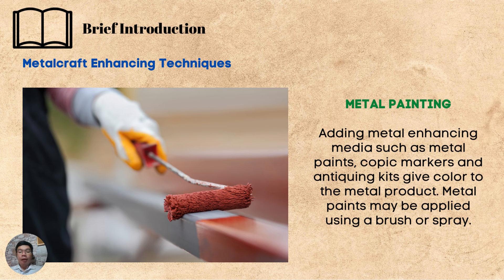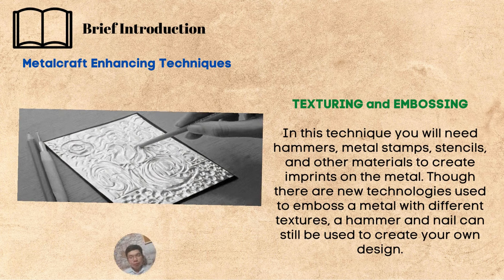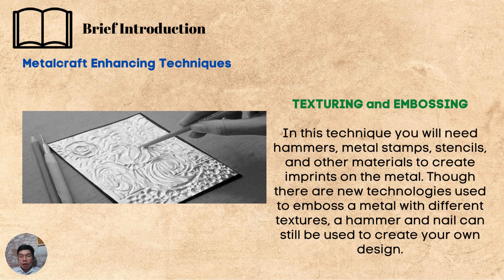Metal painting: adding metal enhancing media such as metal paints, copic markers, and antiquing kits give color to the metal product. Metal paints may be applied using a brush or spray. Texturing and embossing: in this technique, you will need hammers, metal stamps, stencils, and other materials to create imprints on the metal. Though there are new technologies used to emboss a metal with different textures, a hammer and nail can still be used to create your own design.